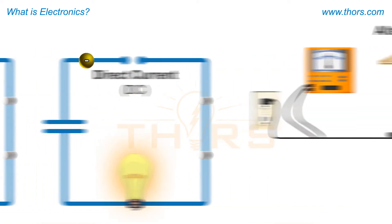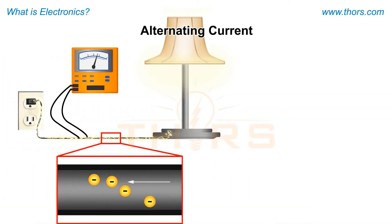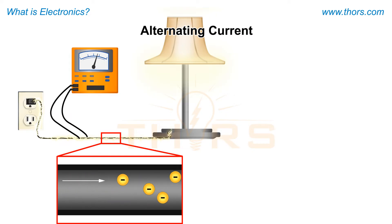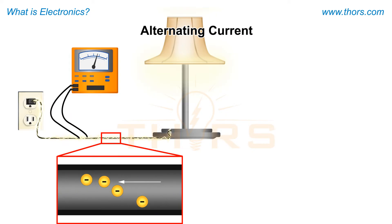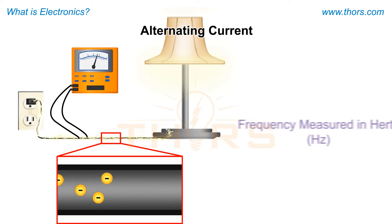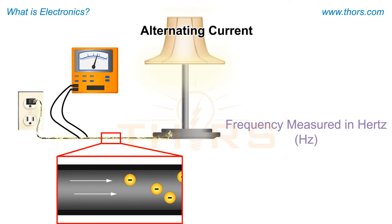Alternating current reverses its direction many times at regular intervals, along with a continuous change in magnitude. The number of reversals per second is called frequency, which is measured in Hertz.